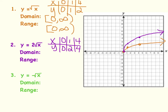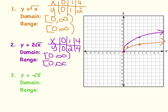What do you notice about the purple graph compared to the orange graph? The purple graph shows a vertical stretch — it's taller, and what caused that is the value in front of the square root. Does this number 2 change my domain and range? The answer is no. The domain will still be from 0 to infinity, and the range will also be from 0 to infinity.